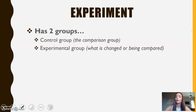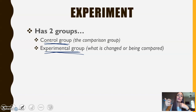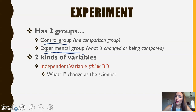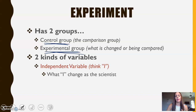In an experiment we have two groups: the control group and the experimental group. The control group is the comparison — it's what's normal. If I'm testing different water on plants and I water one with salt water and one with regular water, the control is regular water and the experimental group is the salt water. The independent variable is what you, the scientist, are changing — you can change the light, water, or whatever. The dependent variable is what you're observing and recording as data.